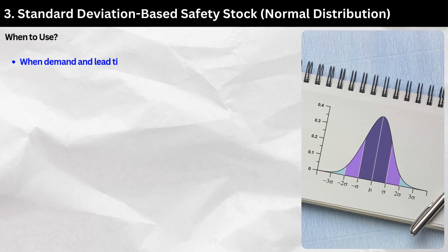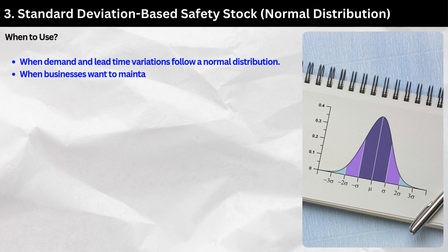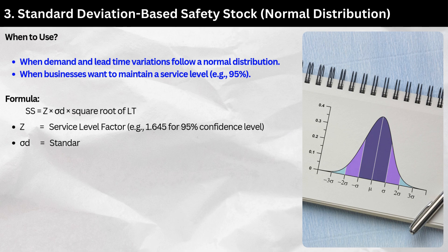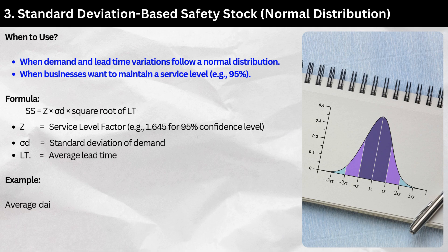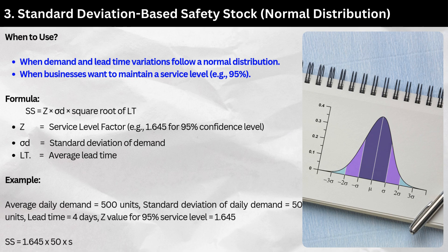Method 3: Standard deviation-based safety stock — normal distribution. When to use: when demand and lead time variations follow a normal distribution and businesses want to maintain a service level, e.g., 95%. Formula: SS = Z × σD × √LT, where Z = service level factor (e.g., 1.645 for 95%), σD = standard deviation of demand, LT = average lead time. Example: Average daily demand = 500 units, σD = 50 units, LT = 4 days, Z = 1.645. SS = 1.645 × 50 × √4 ≈ 165 units.